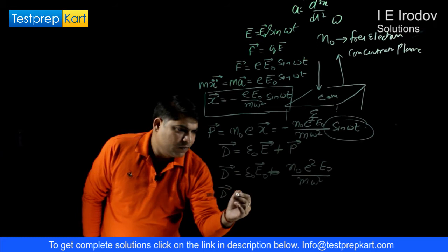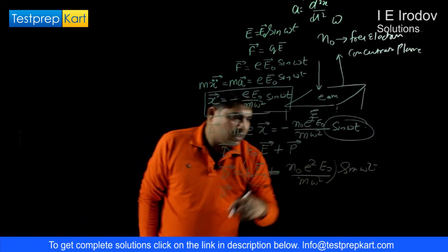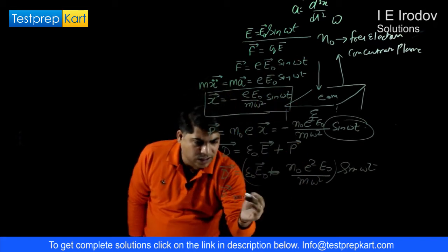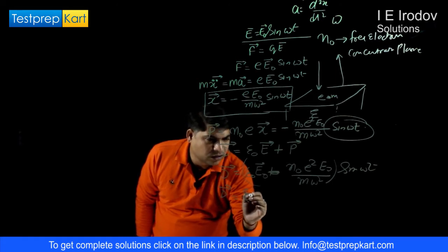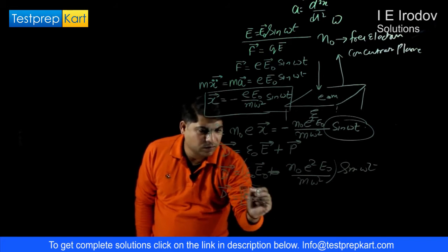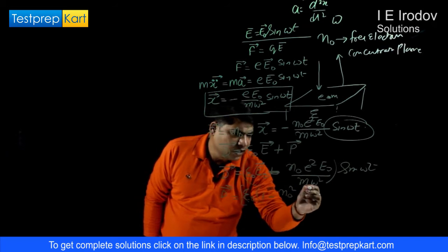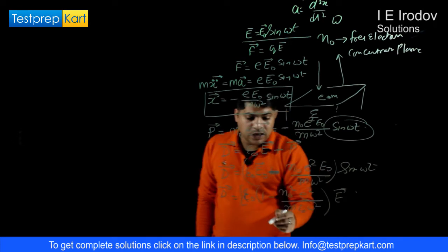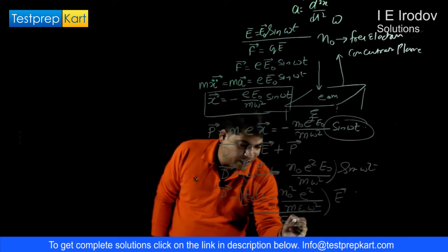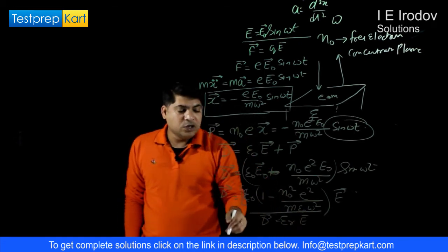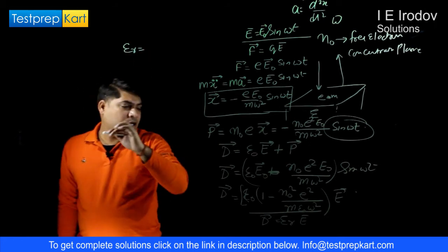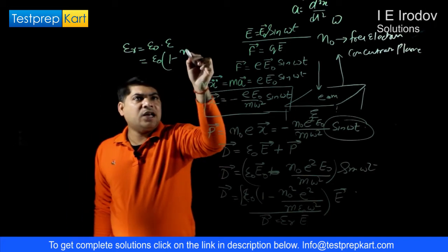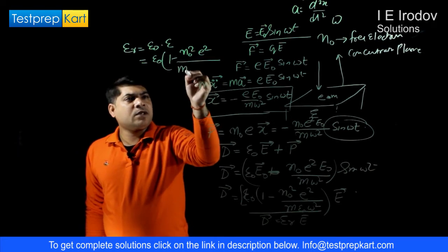So from here we get D = epsilon0 * E0 minus N0 e² E0 / (m omega²), and taking E0 sin(omega t) out of the bracket, which equals our vector E, we get D = epsilon0 [1 - N0 e² / (m epsilon0 omega²)] * E. This is equivalent to the relative permittivity times electric field.